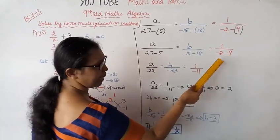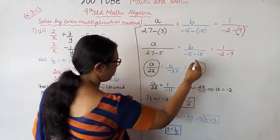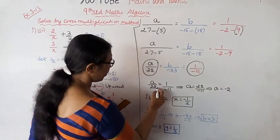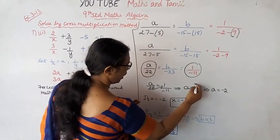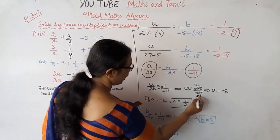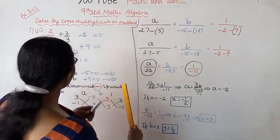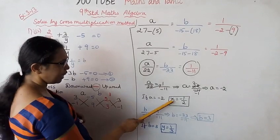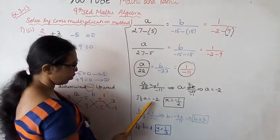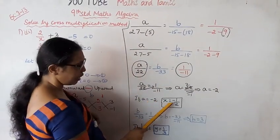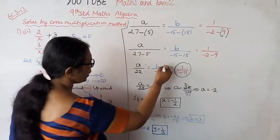So a by 22 equals 1 by minus 11. Therefore a equals 22 divided by minus 11, which gives a equal to minus 2. Since a equals 1/x and a equals minus 2, we get x equal to minus 1/2 by taking the reciprocal.